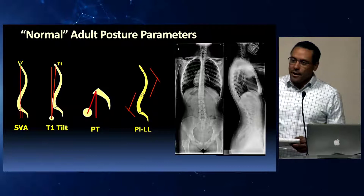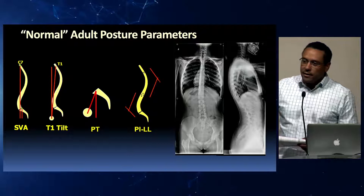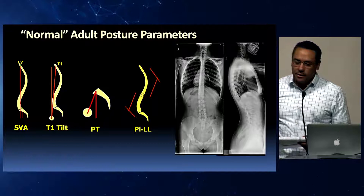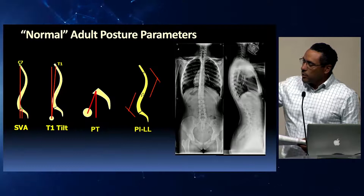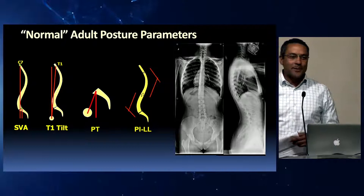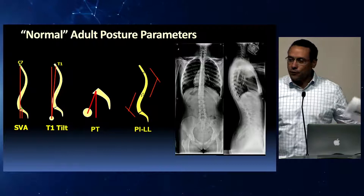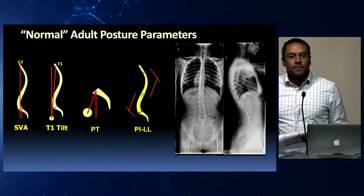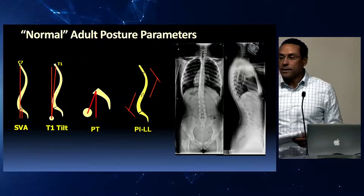Do you recognize these terms at the bottom? What is SVA? What would be normal for SVA? Certainly less than 10, but less than 5 centimeters. Do you know what T1 tilt stands for? It stands for T1 tilt. This is probably the least familiar of these four parameters, but it's one that's gaining more prominence. Your T1 tilt should be zero, basically.